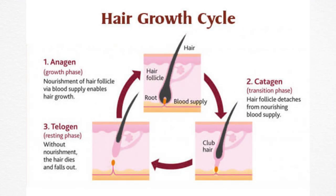The hair growth cycle comprises three phases: anagen (the growth phase), catagen (the transitional phase), and telogen (the resting phase). During the telogen phase, the hair follicle is dormant and the hair linked to it gradually falls out, allowing space for new hair to develop and grow.